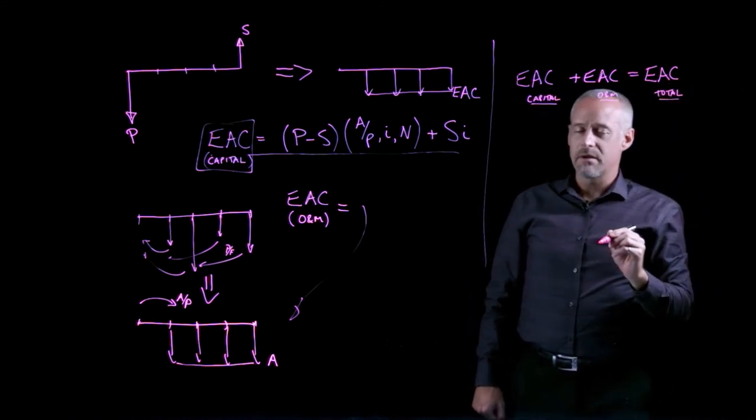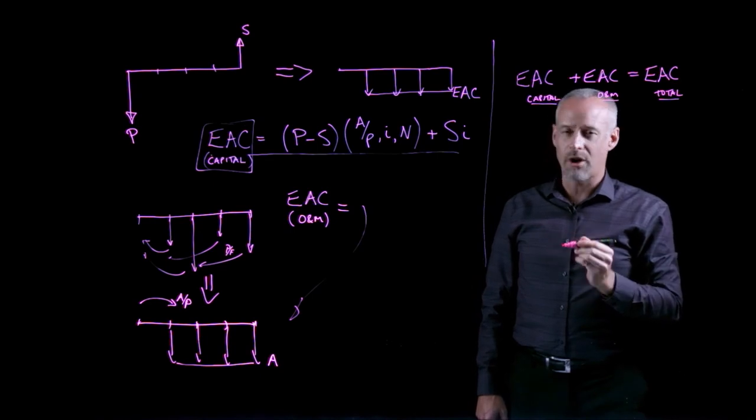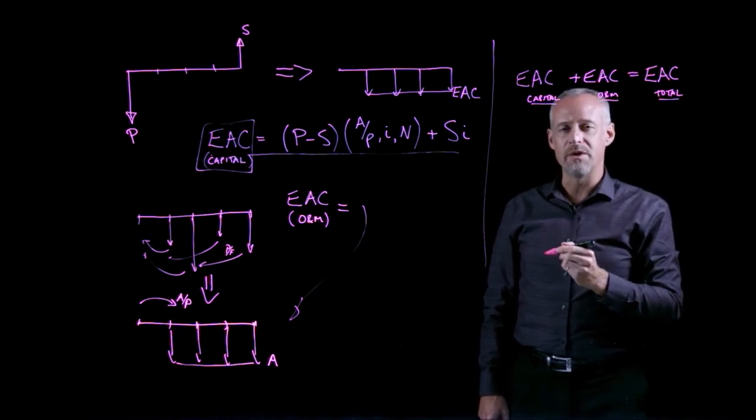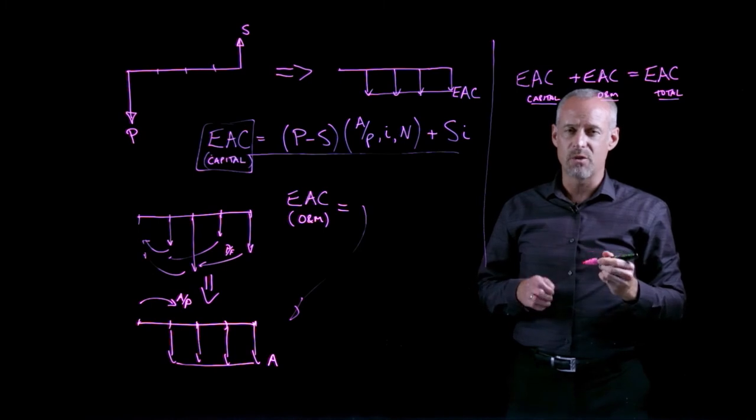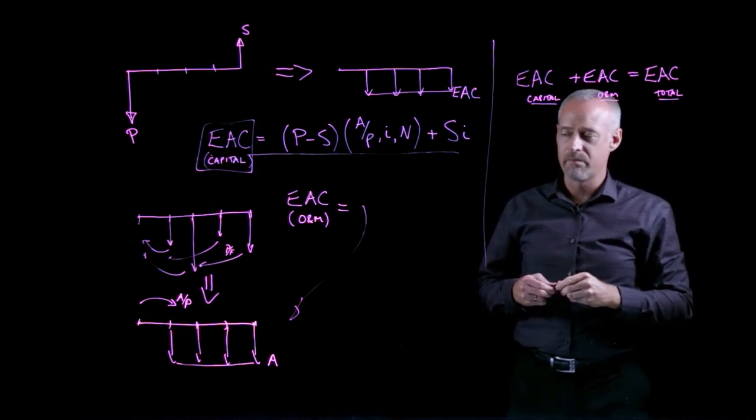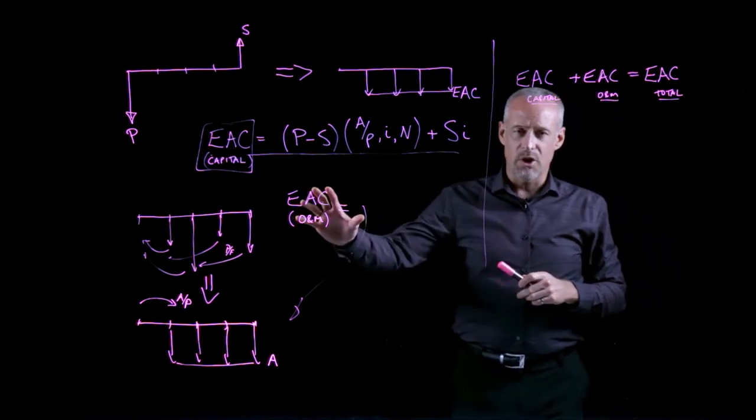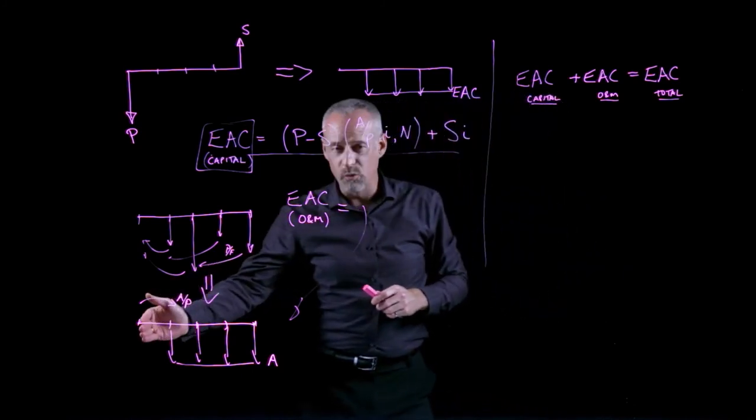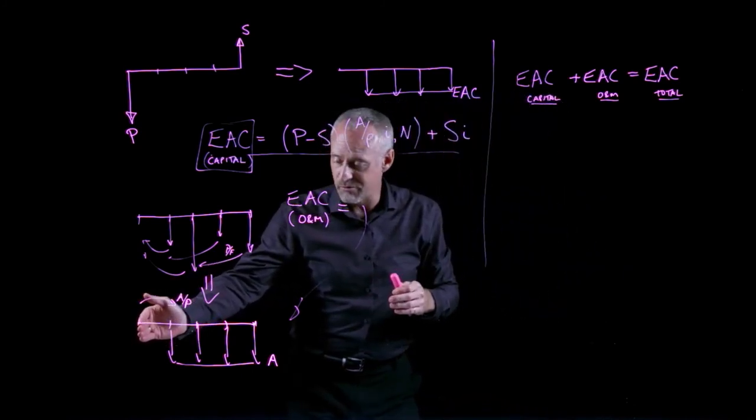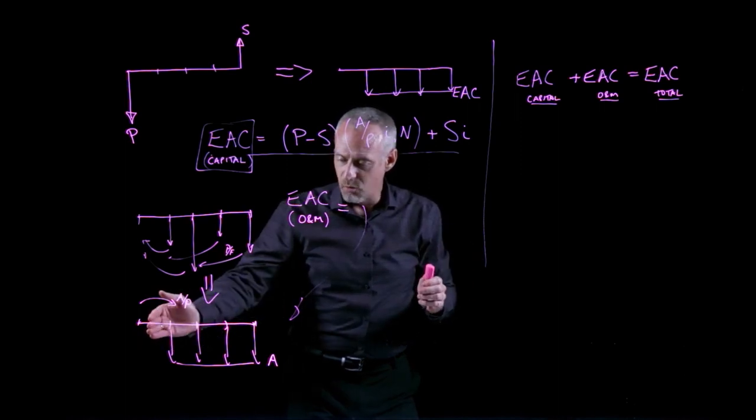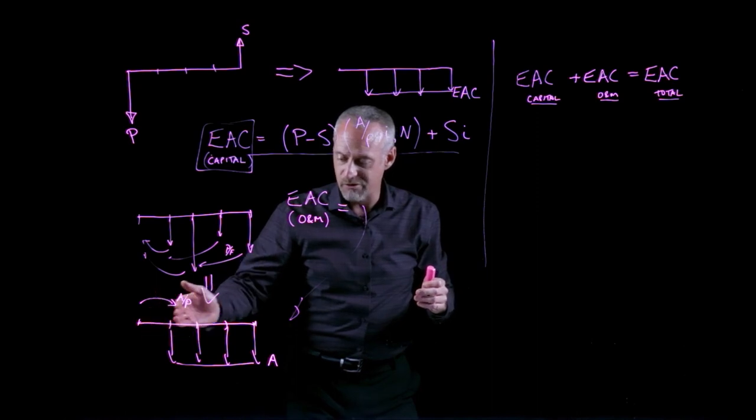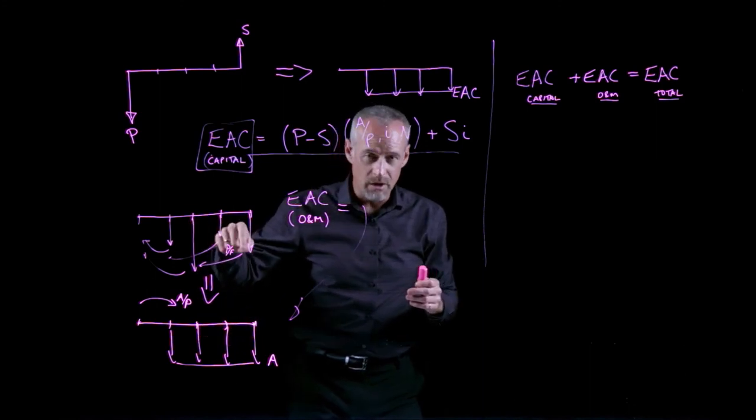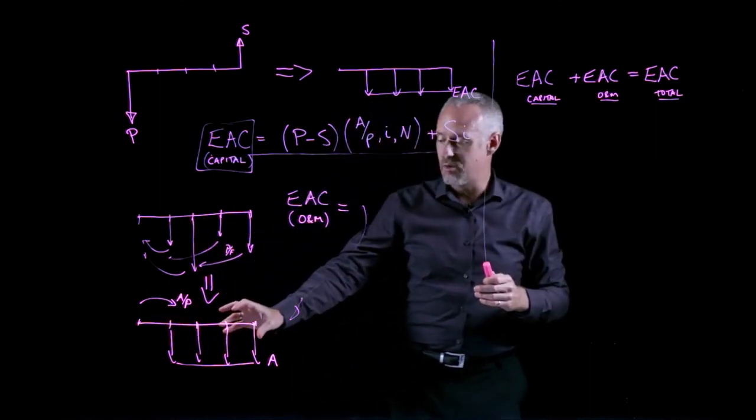And the whole point of calculating the equivalent annual cost is in order to make decisions about how many years should I own a piece of equipment, so that I minimize my equivalent annual cost of ownership. We may see situations where we'll decide we're going to only own the equipment for one year, and we'll evaluate that. We may try another scenario where we own the equipment for two years, another scenario where we own it for three years, and depending on the pattern of costs, we end up with a different equivalent annual cost.